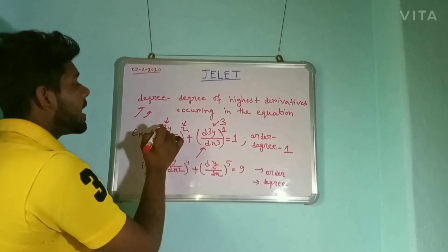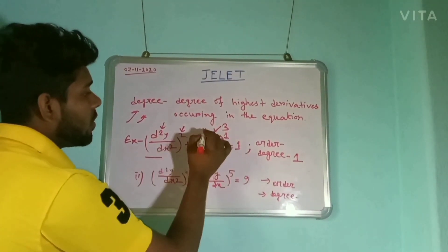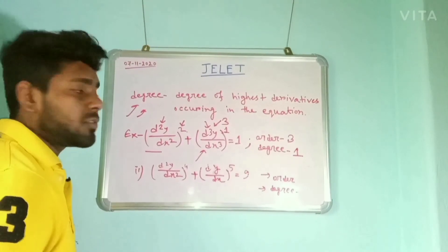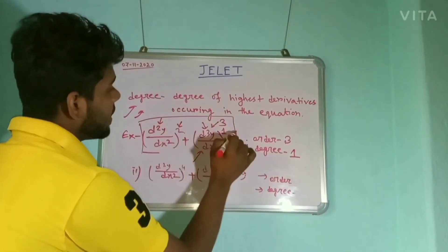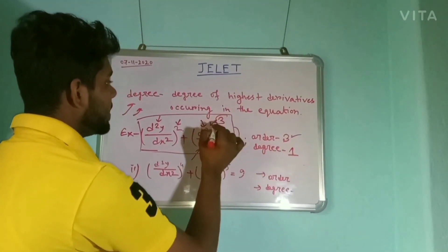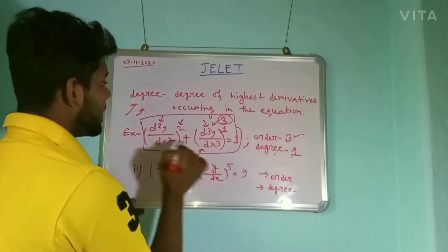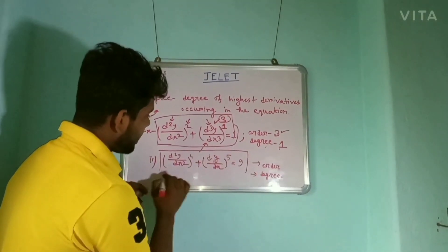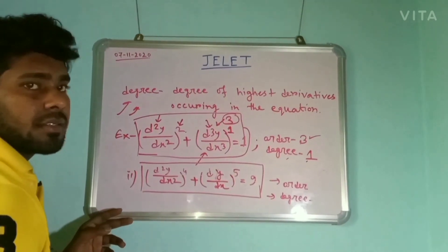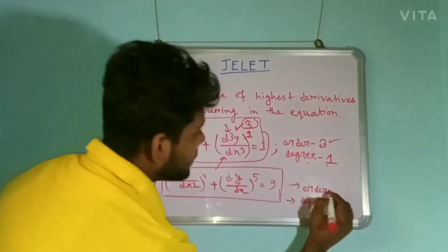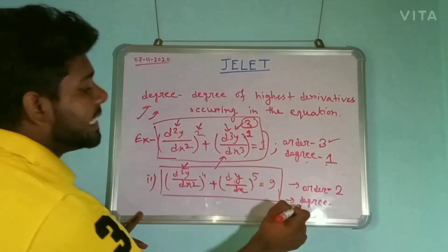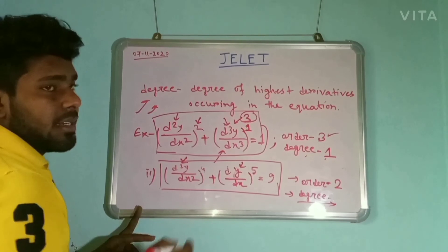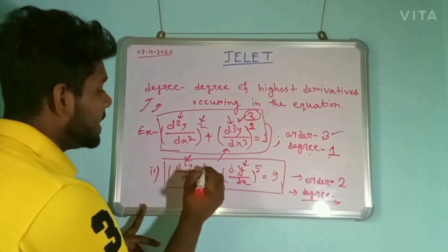Because this is not the highest derivative. The order is also 3, because this is the highest derivative of this particular equation. So the order is 3 and the degree is 1, meaning this one. For another example, the highest order is 2, and the degree of the equation — here the lowest derivative has power 5, but we know that degree is the power of the highest derivative — so it should be 4.